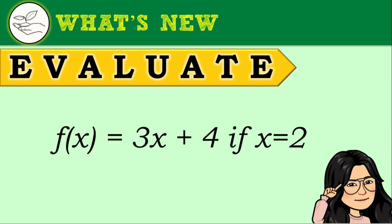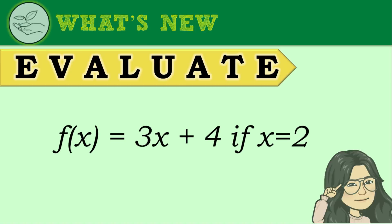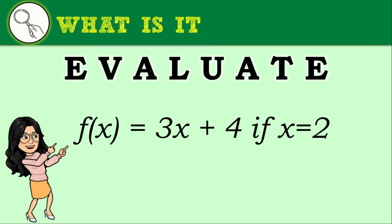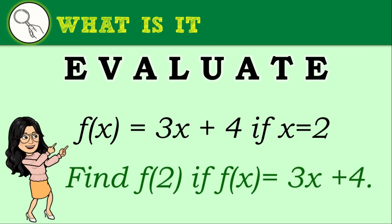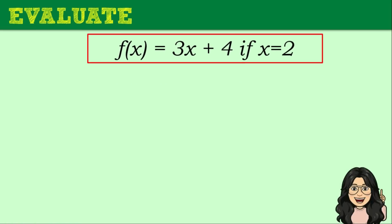Let's evaluate this given function: f of x is equal to 3x plus 4 if x is equal to 2. Another way of presenting the question is like this: Find f of 2 if f of x is equal to 3x plus 4. It means the same thing with the previous statement. f of 2 means that the x value would be equal to 2.